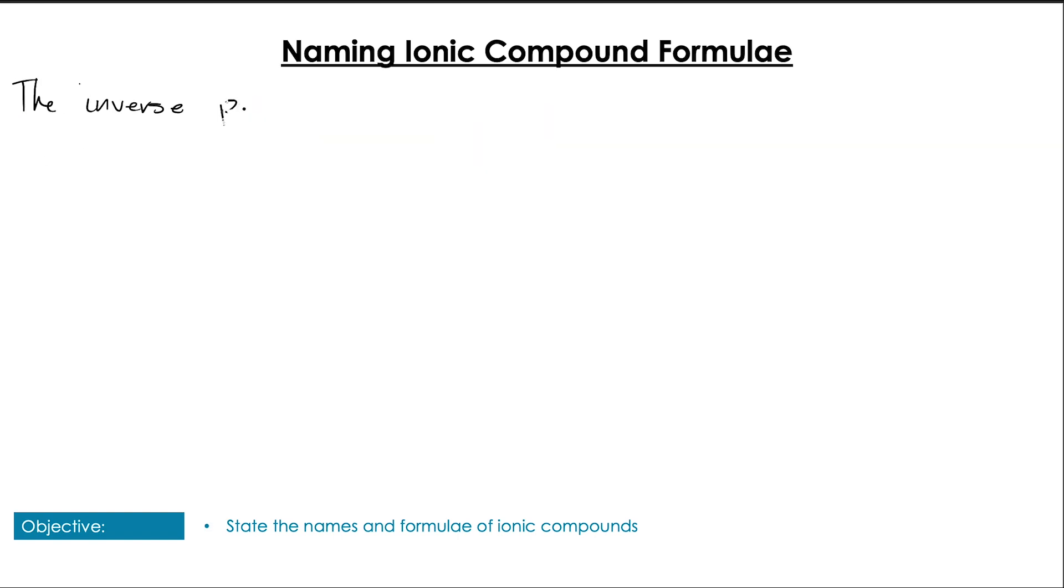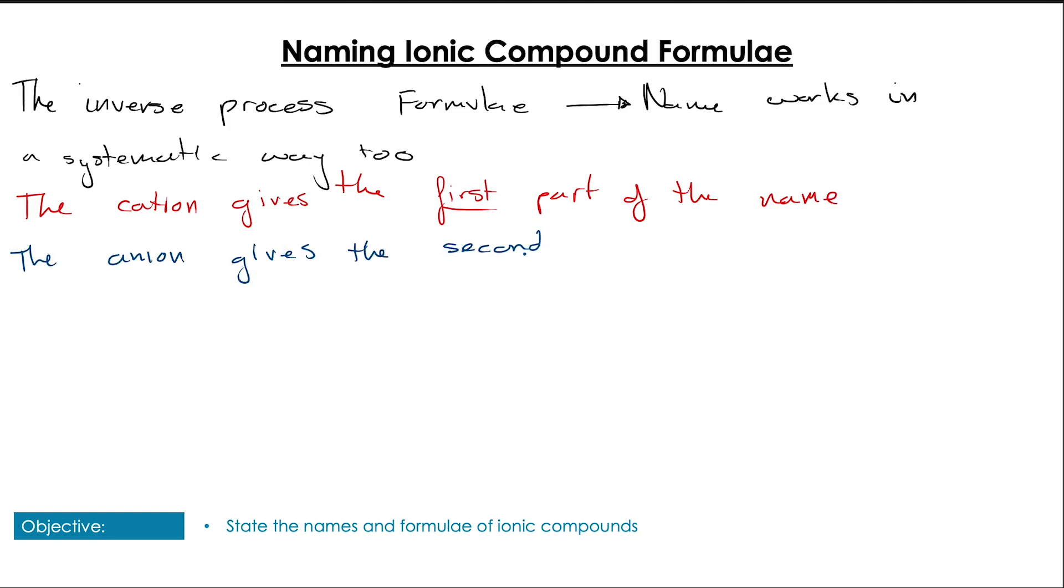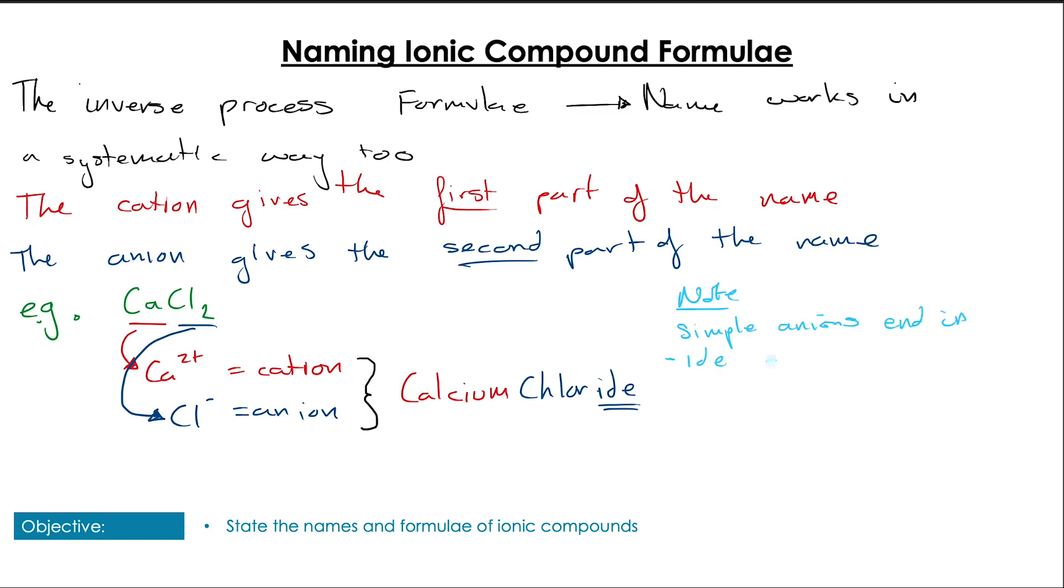If you want to name an ionic compound you don't know the name of, we're effectively going to do the inverse process of writing the formula. This works systematically where the cation of the ionic compound gives the first part of the name, and the anion gives the second part. If we take calcium chloride as an example, we have CaCl2. The cation is calcium, and the anion is chlorine or the chloride ion Cl-. So we have calcium chloride, and we change the end part of the name when we have a negative oxidation state to -ide. That's for our simple anions only.